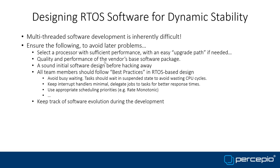Another aspect is tracking software evolution during development, especially in a team where people may do things their own way — difficult to oversee in source code alone. You should detect and fix anomalies in software behavior as early as possible. Otherwise, as behavior gets increasingly complex, these glitches will accumulate and make things really difficult.